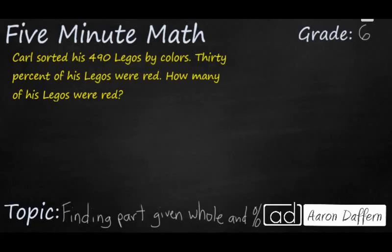Carl sorted his 490 Legos by colors. 30% of his Legos were red. How many Legos were red? When we're dealing with a problem like this, we need to keep in mind that a part divided by a whole is what gets us our percent.